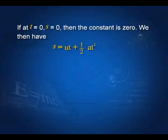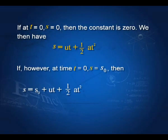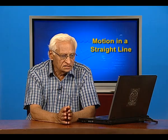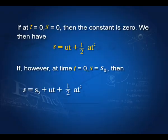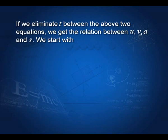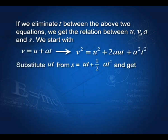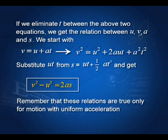On the other hand, if at time t equal to 0, s is equal to some value s₀, then the equation becomes s equal to s₀ plus ut plus half at squared, because s₀ is the constant of integration. If we eliminate t between v equal to u plus at and s equal to ut plus half at squared, we get the third equation: v squared minus u squared is equal to 2as.